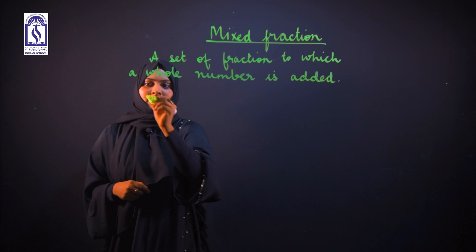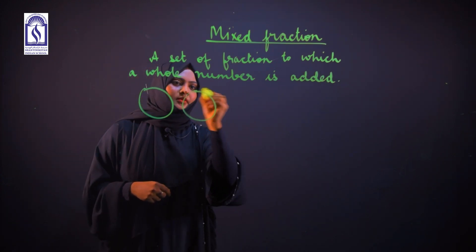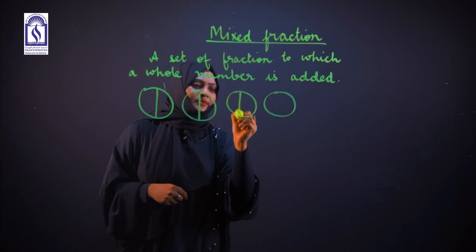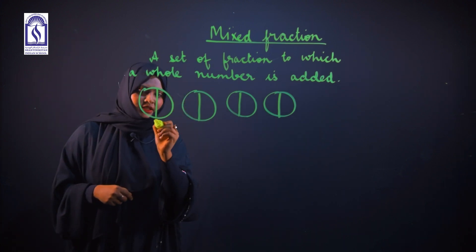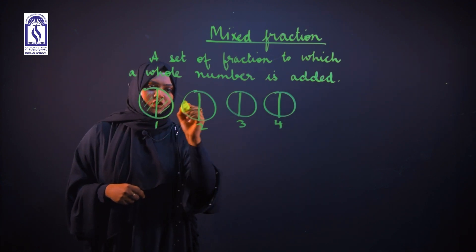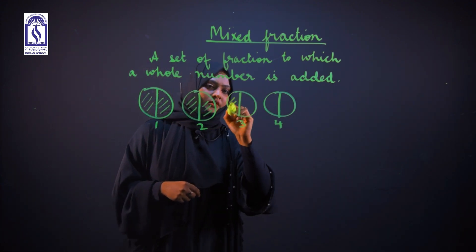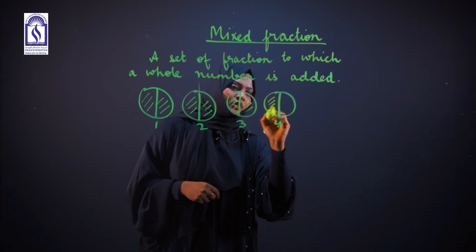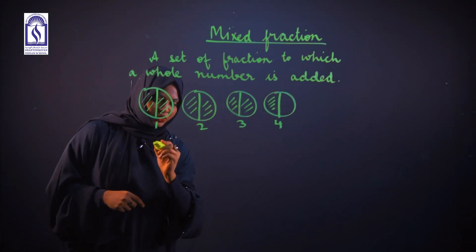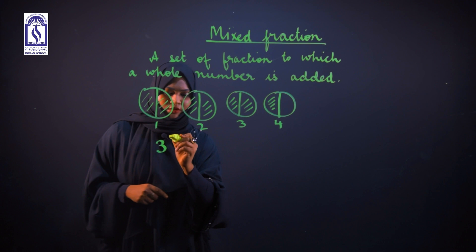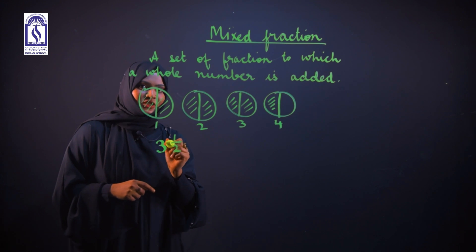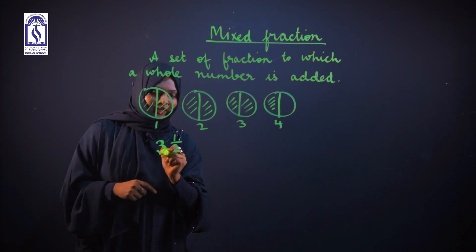For example, if we have 4 figures which are divided into 2 parts each, we are taking figure 1 whole, figure 2 whole, figure 3 whole, and 1 part of figure 4. This means 1, 2, 3—3 whole and half of the 4th figure. This is called a mixed fraction because it has got a whole number added to it.